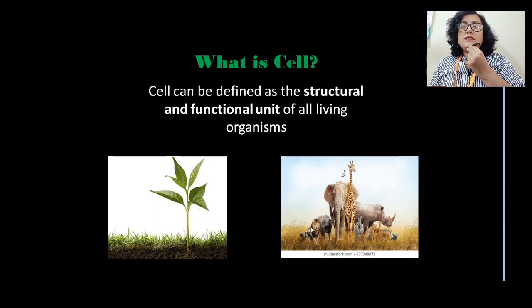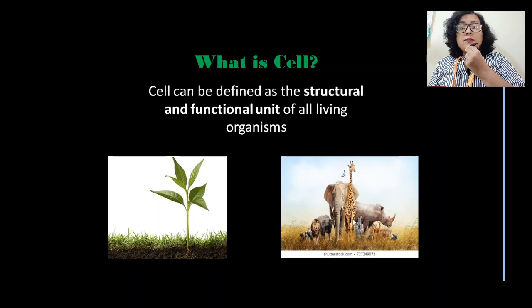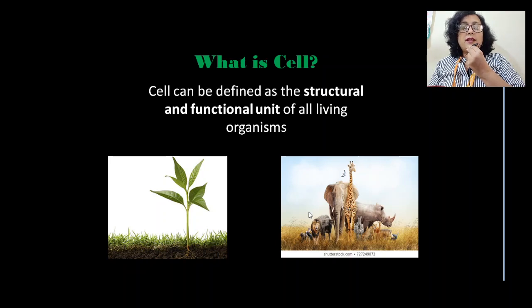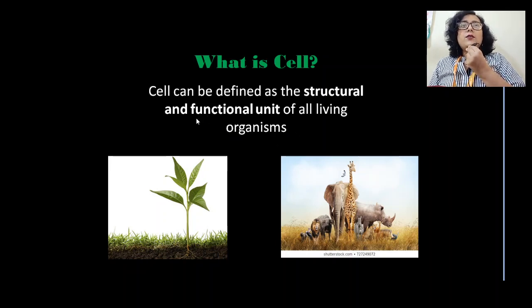Let's take the example of animals. There are various animals — a carnivore like a lion or a herbivore like a giraffe or an elephant. No matter what they eat, they have basic physical functioning like walking and eating, and biochemical functioning like respiration, digestion, and excretion. Who is performing all these functions inside the body? It is again the core unit — the cell.